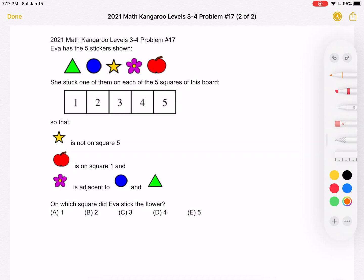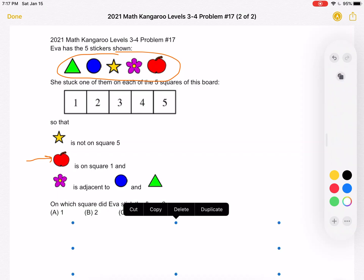So again, we have these five stickers and we're placing one on each of the five squares of the board. Let's start with what we know. We know that the apple must be on square one. So that's my little drawing of the apple on square one.